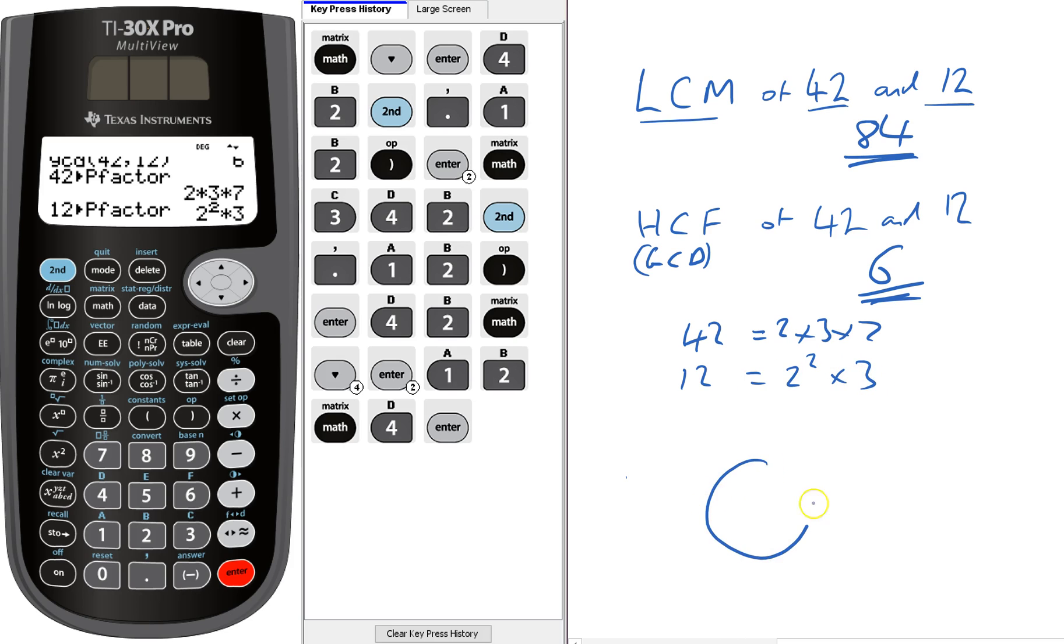So I quite like putting it into Venn diagrams. And what's shared? Well, 3 is shared, so it goes in the middle there. And one of those 2s is shared, so that goes in the middle.